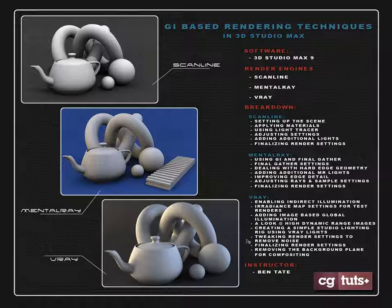Then we'll look at how to reduce noise in your render and tweak it out to get a good result and finalize all the settings. At the end, I'll show you how to remove the background plane in case you want to composite your render or your objects onto another background, including a couple of techniques for removing it without screwing up the lighting. So that's what we're going to be doing — let's jump into Max and get started.